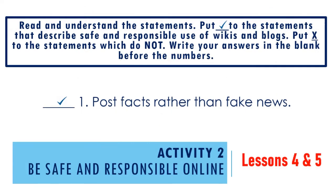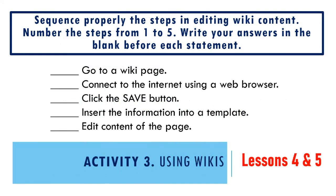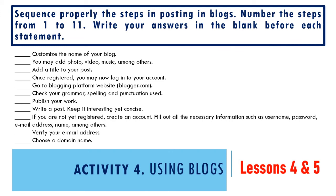Activity 2 is titled 'Be Safe and Responsible Online.' Read and understand the statements. Put a check mark to the statements that describe safe and responsible use of wikis and blogs, and an X mark to those which do not. Write your answers in the blank before the numbers. For example: 'Post facts rather than fake news' — put a check mark in the blank before the number. Activity 3 is about using wikis — sequence the steps in editing wiki contents and number them from 1 to 5. Activity 4 is using blogs — sequence the steps in posting in blogs and number them from 1 to 11.